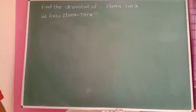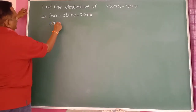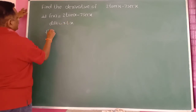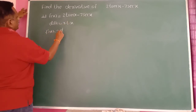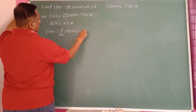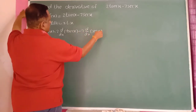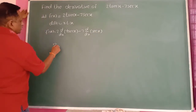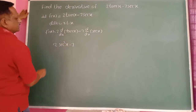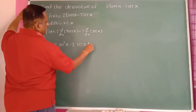Find the derivative of 2 tan(x) minus 7 sec(x). Differentiating with respect to x, f'(x) equals 2 into differentiation of tan(x) minus 7 into differentiation of sec(x). This equals 2 times sec²(x) minus 7 times sec(x) tan(x).